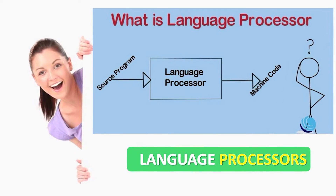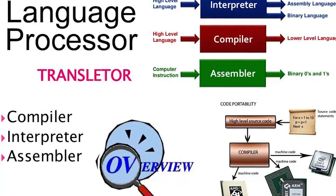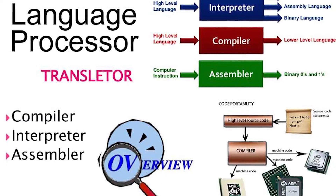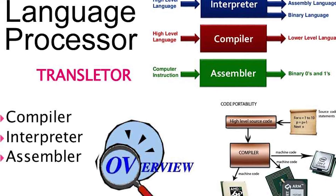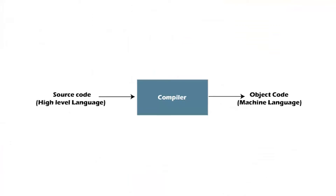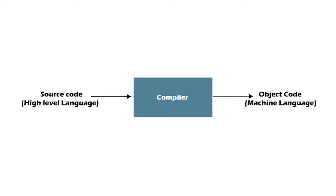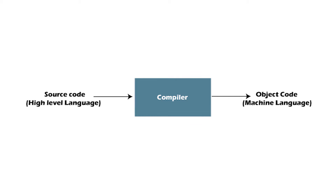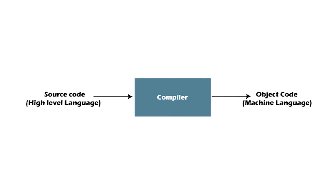A language processor, which also falls under system software, refers to software that converts human-readable language into machine language and vice versa. The conversion is done by the language processor. It converts programs written in high-level programming languages like Java, C++, Python, etc. — known as source code — into a set of instructions easily readable by machines, known as the object code or machine code.